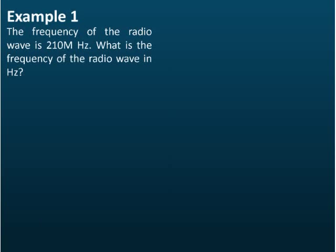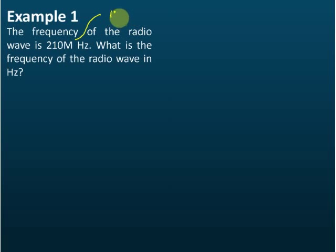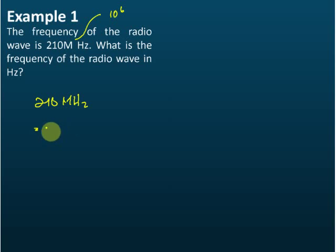Example one: The frequency of a radio wave is 210 megahertz. What is the frequency of the radio wave in hertz? Mega is 10 to the power of 6, or one million. So 210 megahertz is equal to 210 times 10 to the power of 6. You can give your answer in standard form.